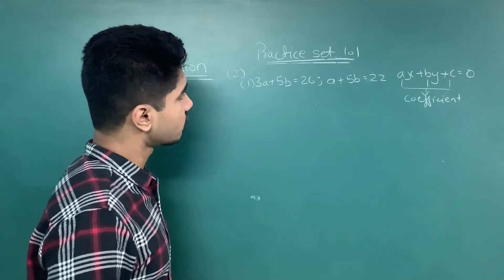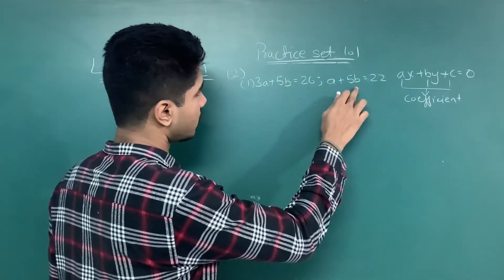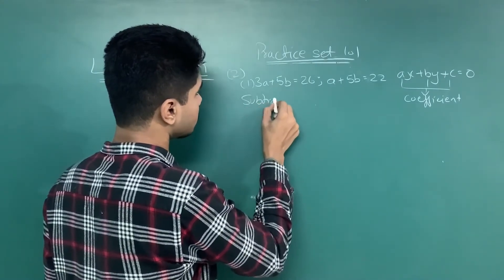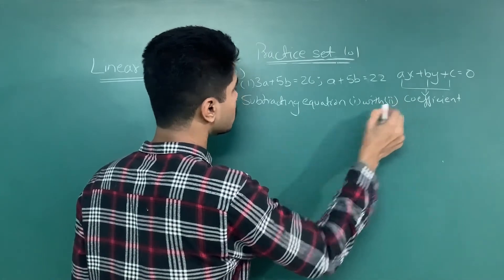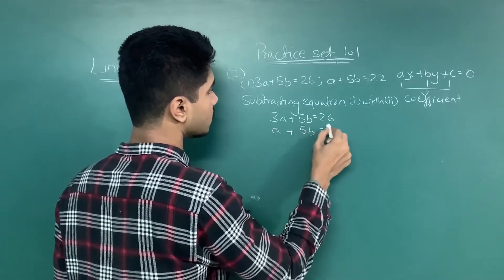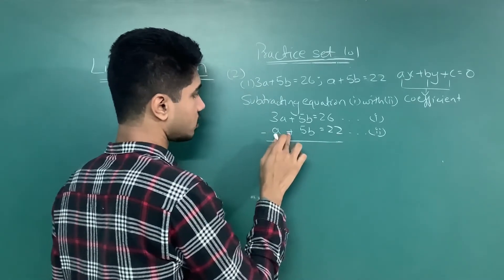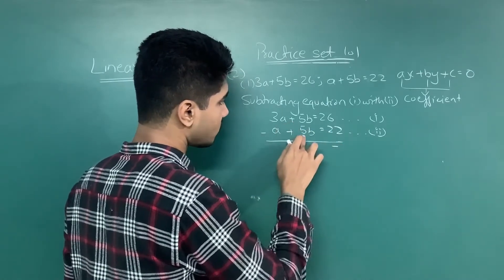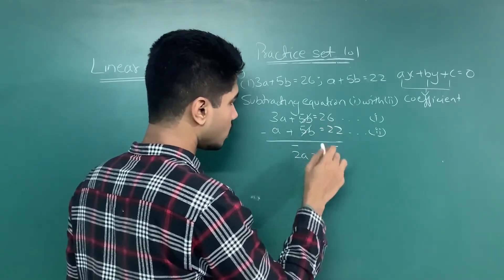Second question: 3A plus 5B is equal to 26, and A plus 5B is equal to 22. We can see that 5B and 5B — variable B has the same coefficient — so we can start by subtracting. Subtracting equation 1 with equation 2: the 5B terms cancel. 3A minus A gives 2A, and 26 minus 22 gives 4, so 2A equals 4, giving A equals 2.